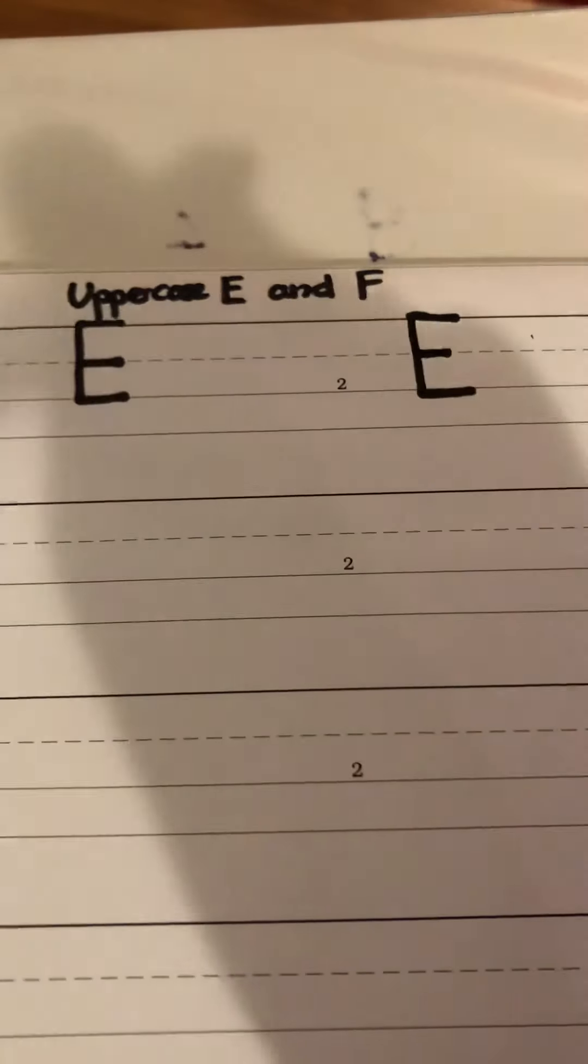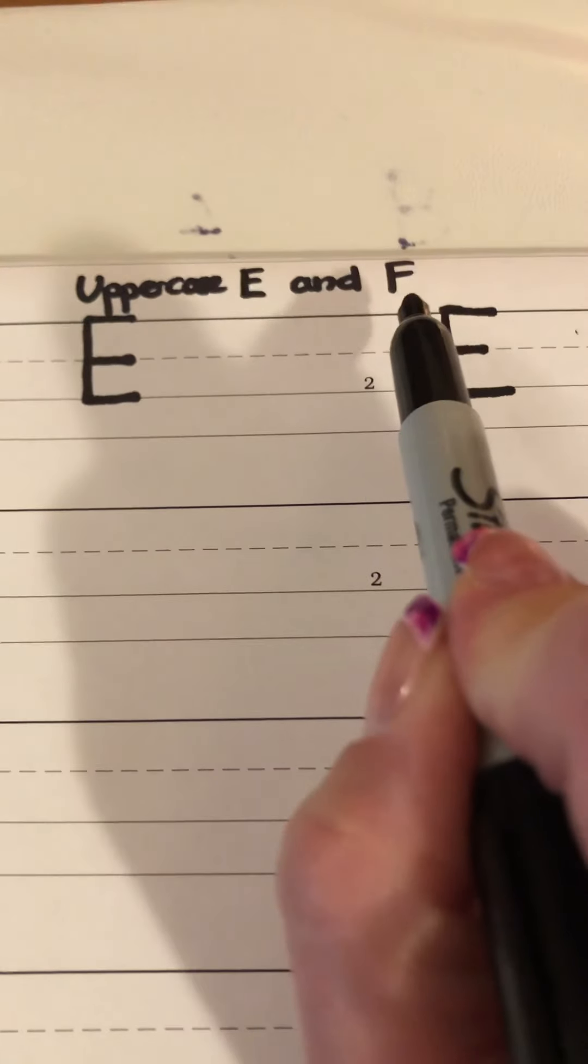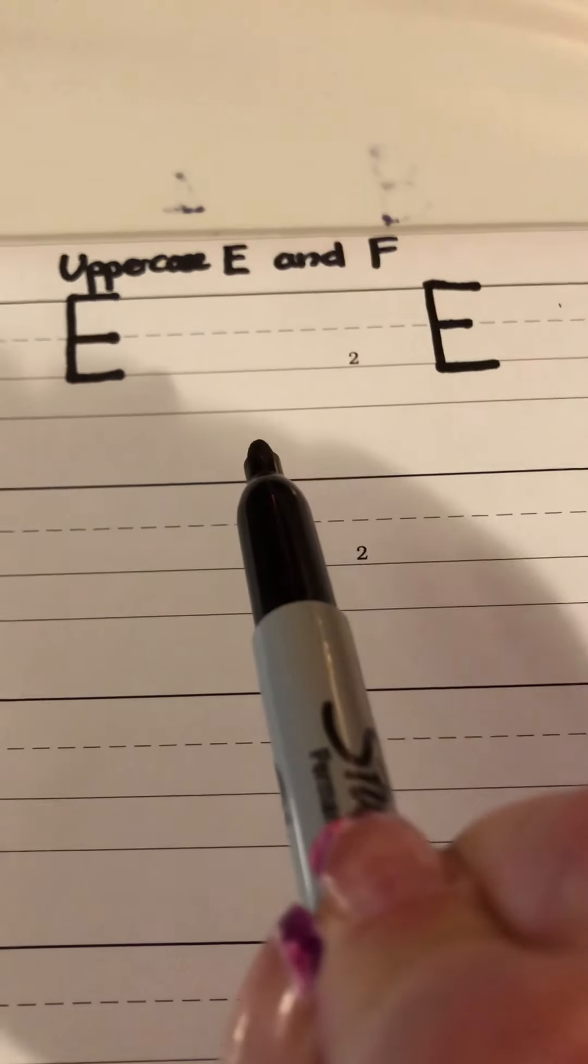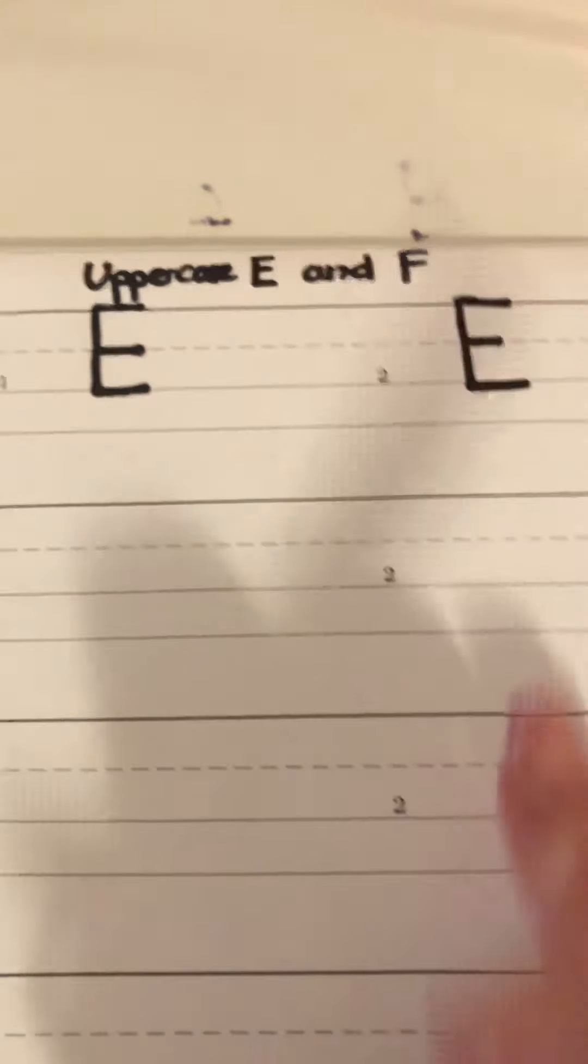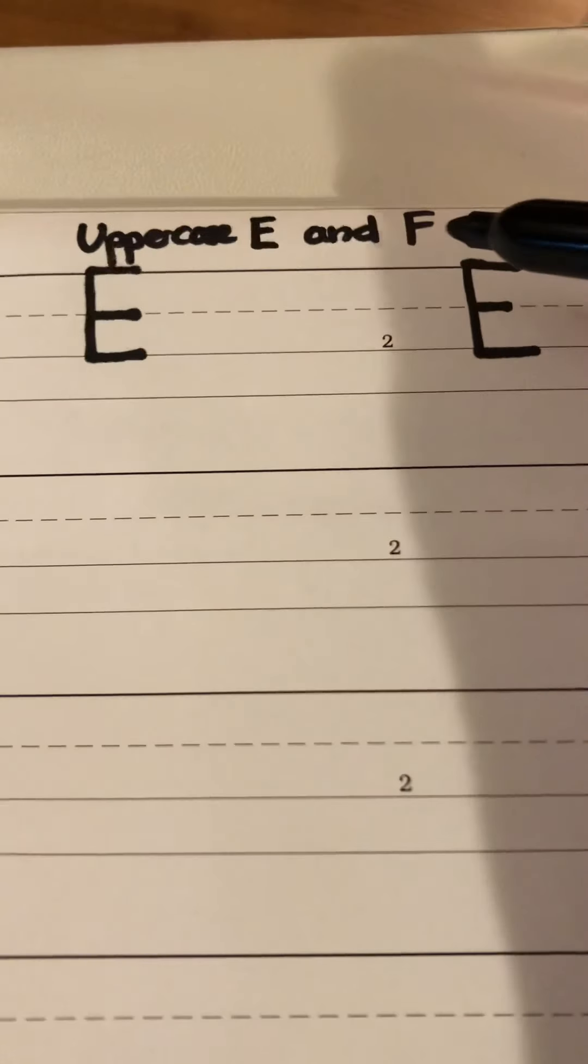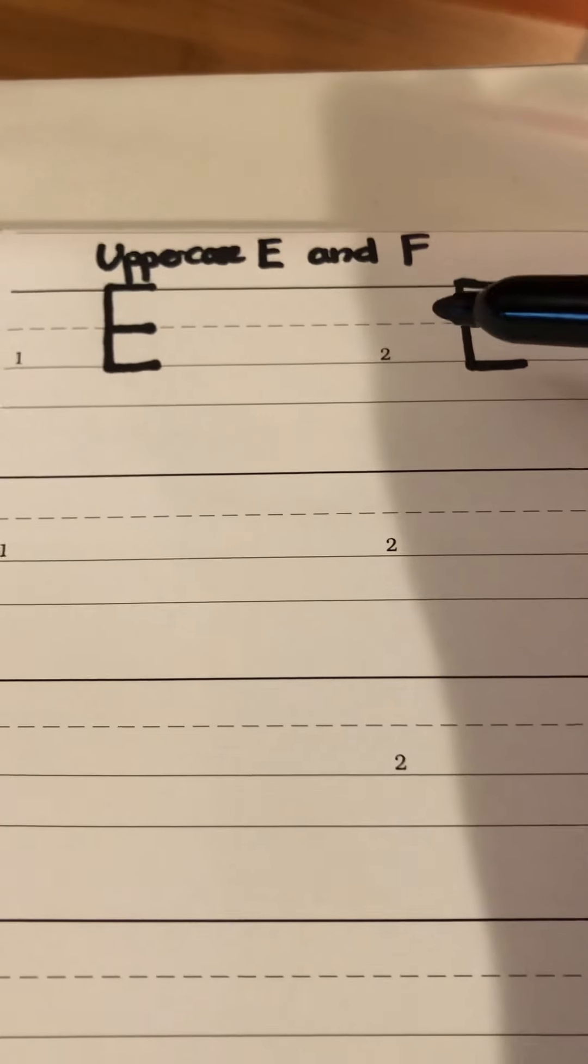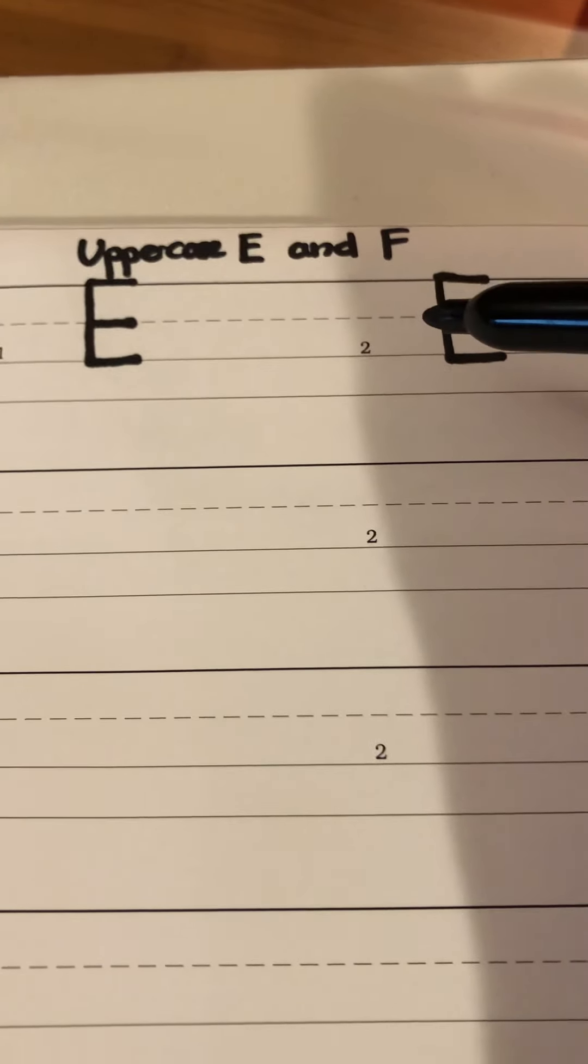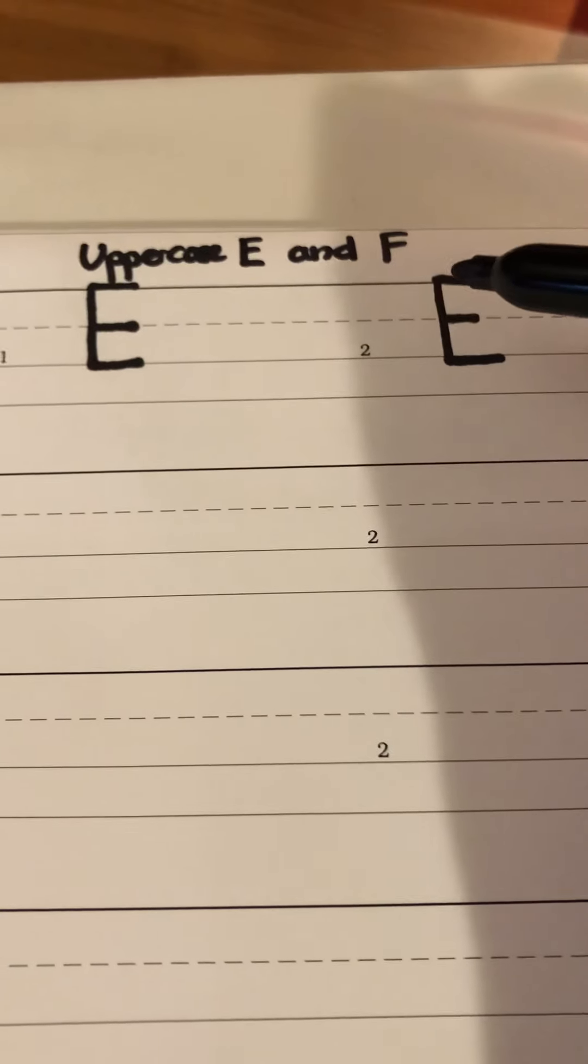Let's do our next letter, uppercase F, which looks a lot like E, doesn't it? F is a consonant, which means it's one of the letters that are not the vowels A, E, I, O, U. So if it's not a vowel, it is a consonant.